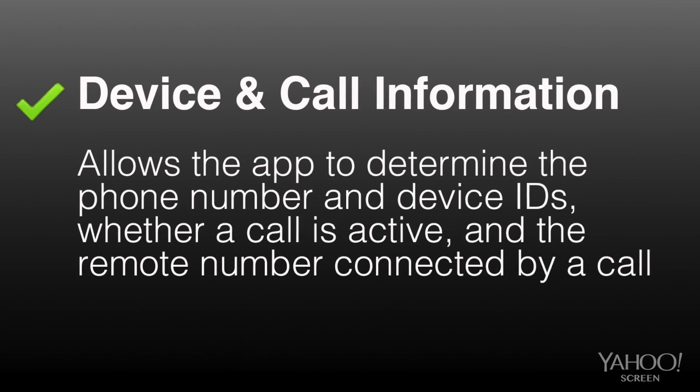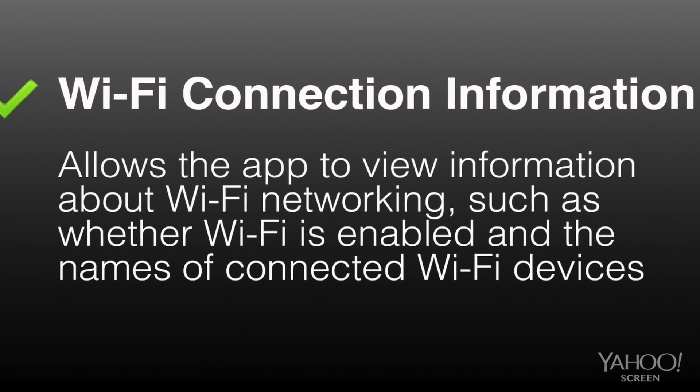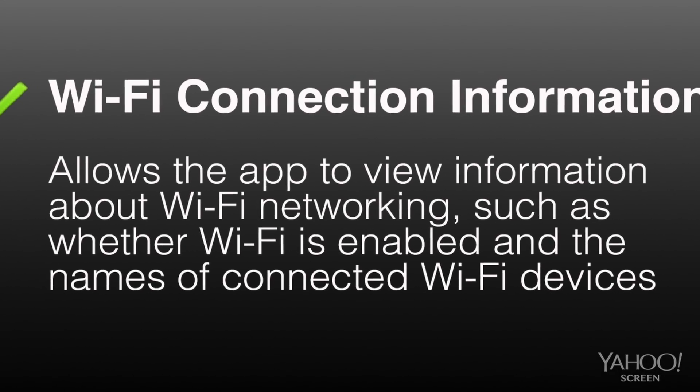I wrote to the Weather Channel to ask about their app, and they told me the same kind of thing. Why does it require this permission? So that the app can pop up severe weather alerts on your screen. Why does it require this permission? Because Android phones use Wi-Fi to help determine your position, and a weather app needs to know where you are so it can tell you what forecast to show you.